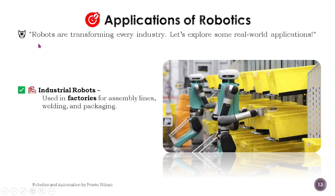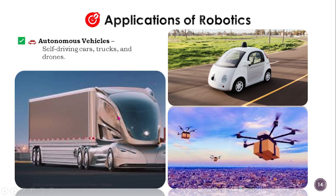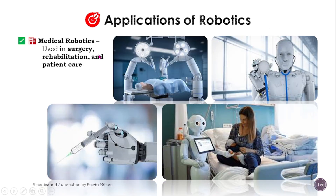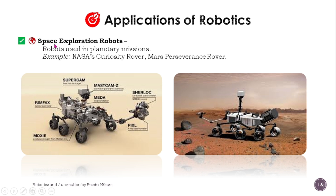Applications of Robotics — robotics is transforming every industry. First, industrial robots are used in factories for assembly lines, welding, and packaging. Second, autonomous vehicles include self-driving cars, trucks, and drones. In medical robotics, robots are used in surgery, rehabilitation, and patient care. In space exploration, robots are used in planetary missions — for example, NASA's Curiosity rover and Mars Perseverance rover.